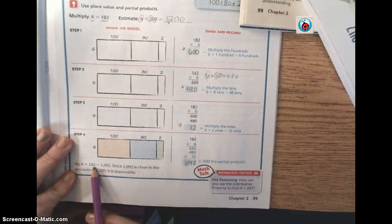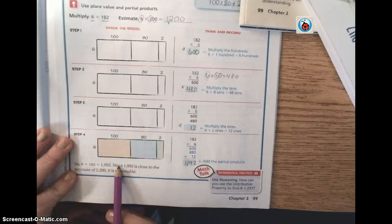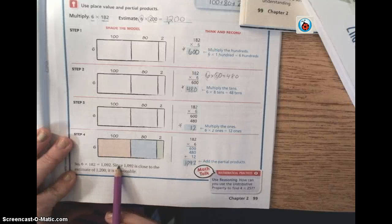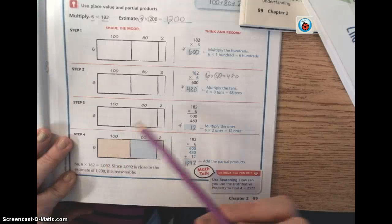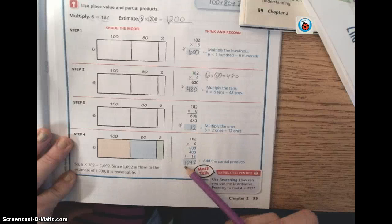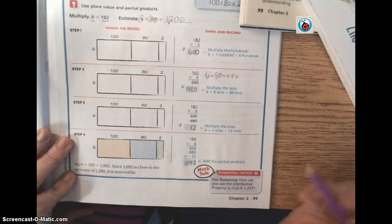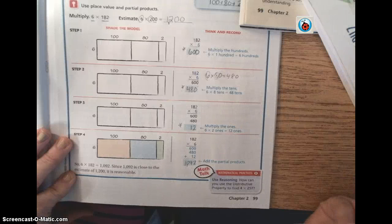So our answer comes to 1,092. So 6 times 182 is 1,092. Now, determine if that is reasonable. Is it in the ballpark? Is it close to our estimate? Our estimate was 1,200. Our answer was 1,092. Yes, I'm going to use my judgment to say those numbers are close. So the answer is reasonable.